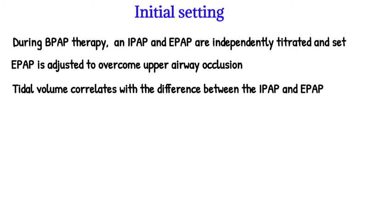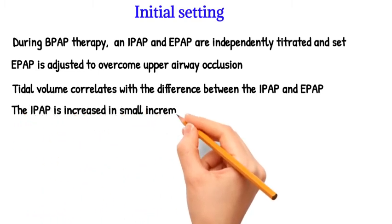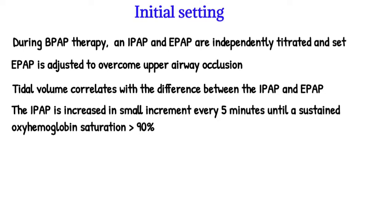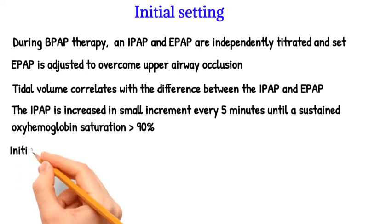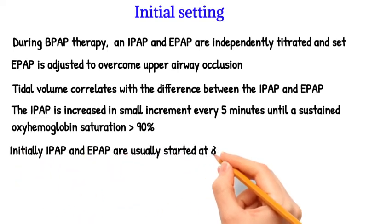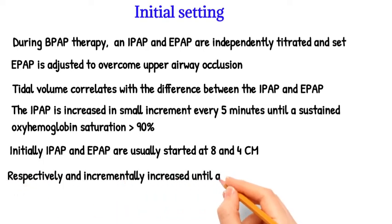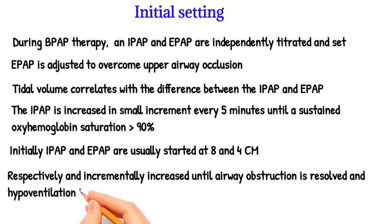Alveolar ventilation is enhanced by a larger tidal volume, assuming that the respiratory rate is constant. Beginning with IPAP and EPAP settings identical to the CPAP level at which obstructive events were eliminated, the IPAP is increased in small increments every 5 minutes until a sustained oxyhemoglobin saturation greater than 90% is achieved, or until the patient becomes intolerant of the respiratory pressure. In cases where OHS and OSA have not been treated with CPAP, IPAP and EPAP are usually started at 8 and 4 cm respectively, and incrementally increased until airway obstruction is resolved and hypoventilation is eliminated.